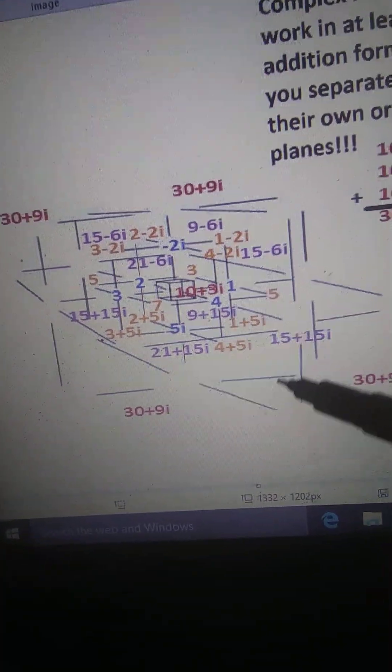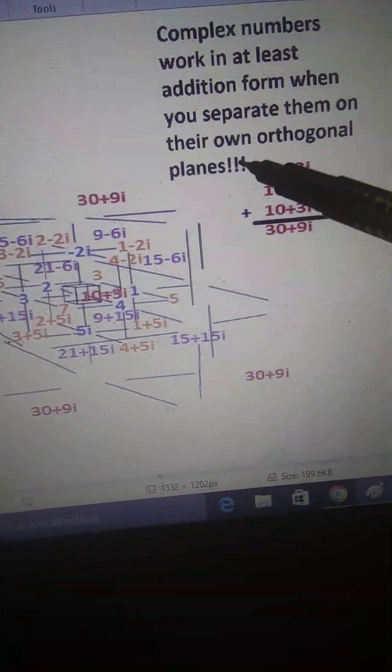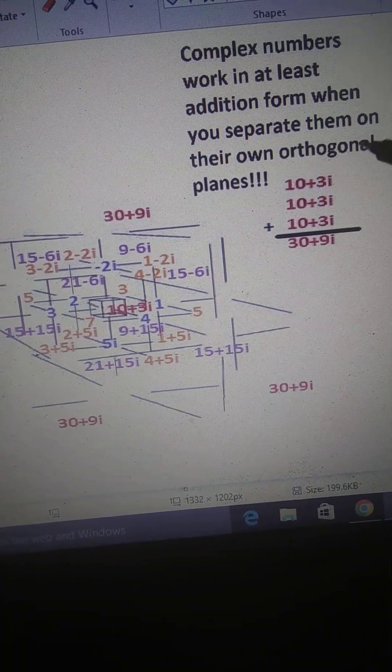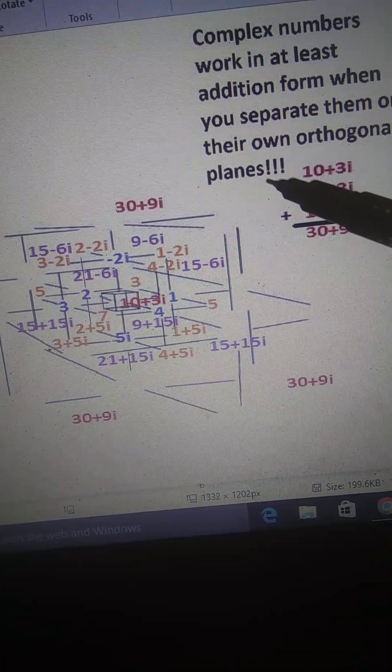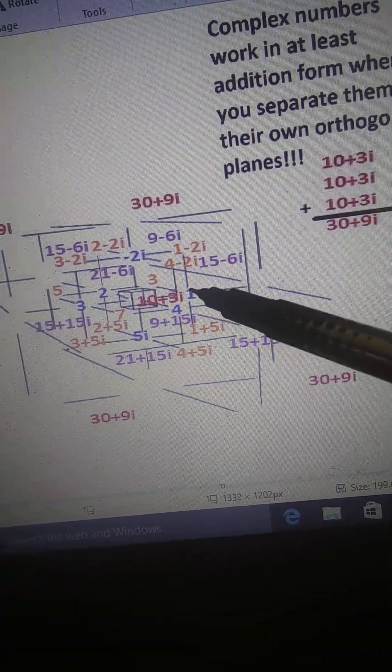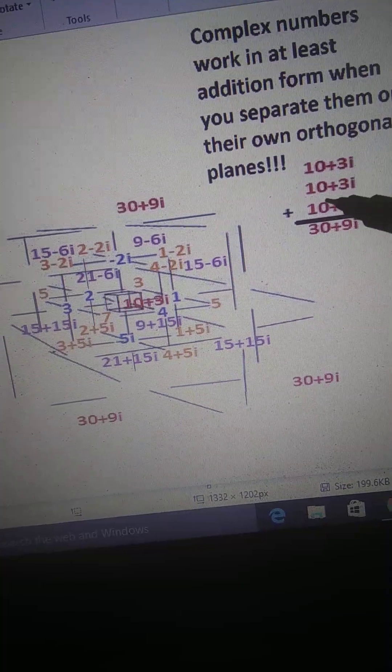So this shows that at least in addition form, complex numbers work when you separate them onto their own orthogonal planes. They follow the rule that three central ghost numbers add up to the outer ghost numbers: thirty plus nine i.